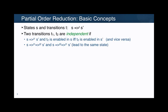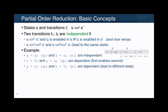Let us review some basic concepts of partial order reduction. One of the central relations is that of the independency relation, or dependency. We say that two events — two instructions, two transitions — are independent if they do not enable each other, and if for every state in which we can execute both consecutively, we are going to get the same result reversing their order.